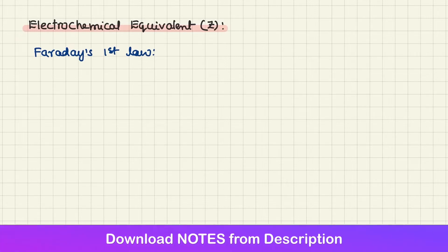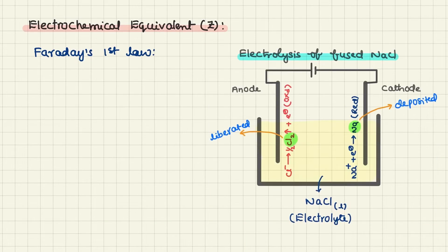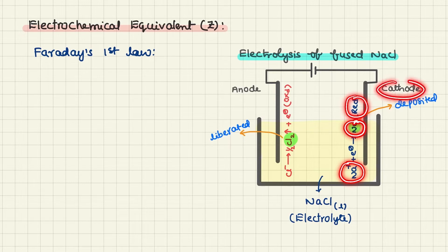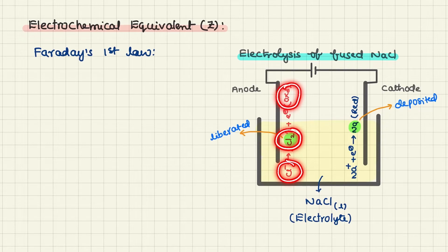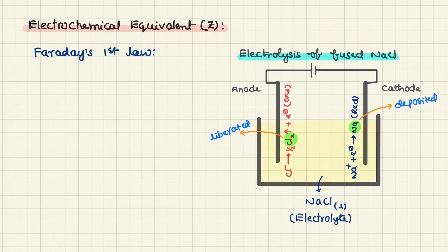Let us consider the electrolysis of fused NaCl, that means liquid NaCl. The Na⁺ ions involving in reduction deposit as sodium at cathode, or Cl⁻ ions involving in oxidation release as Cl₂ gas at anode. These quantities of substances deposited or released at respective electrodes are related to charge.